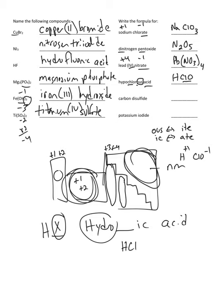Carbon disulfide: we see the prefix 'di,' so I don't need to worry about charges. That gives me carbon and two sulfurs, CS2. The second element always ends in '-ide.'